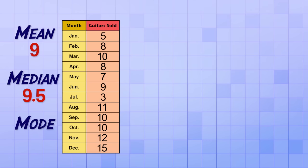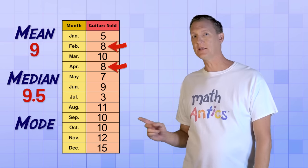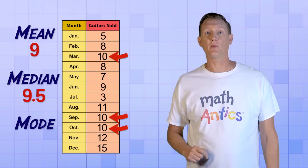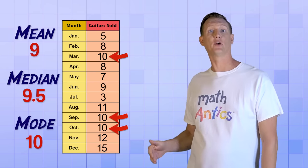Last of all, let's identify the mode of this dataset, if there is one. Well, let's see… there's two 8's in the dataset… Oh, but there's three 10's! That looks like the most frequent number, so 10 is the mode of this dataset. It's the result that occurred most often.